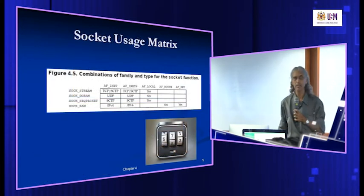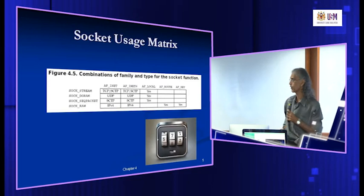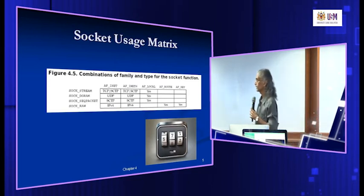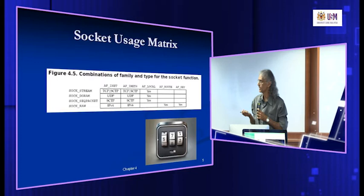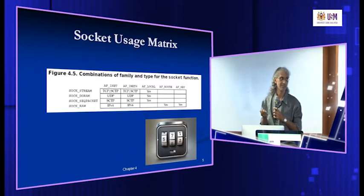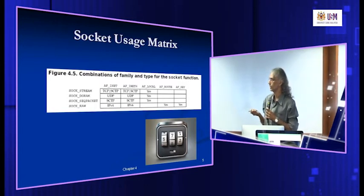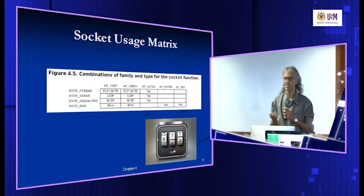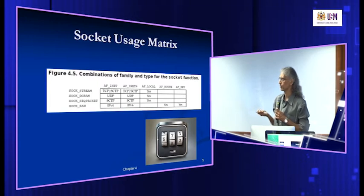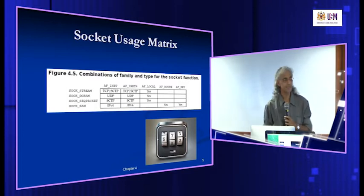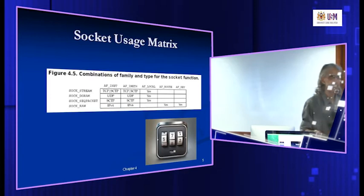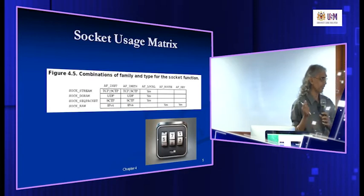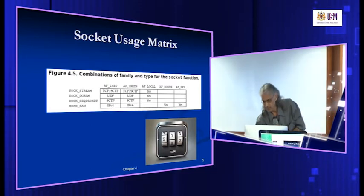Since there are three parameters, there are a few combinations possible, but not all are valid. For example, with AF_INET and SOCK_STREAM, the system will create a TCP or SCTP socket. With SOCK_DGRAM, it can only be used with UDP sockets. The same applies for IPv6. The socket function simply creates an empty socket and returns a socket ID if successful, which is used later in the code.